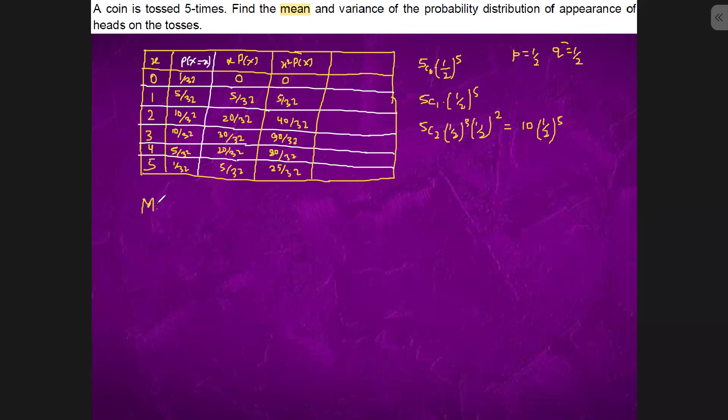So, mean is summation of X times P(X). So add all the following, it is already 32 in the denominator. Adding: 25 plus 30, 20, 40, 70, 80. So, this is 2.5.